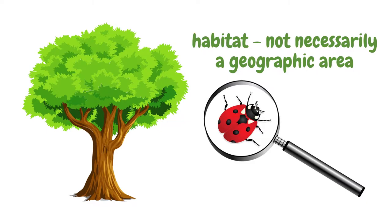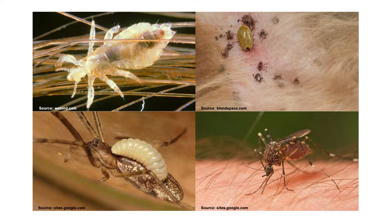A habitat does not have to be a geographic area. For instance, the habitat of a certain insect may just be a certain tree. In fact, the habitats of many small parasites are simply the bodies of their hosts.